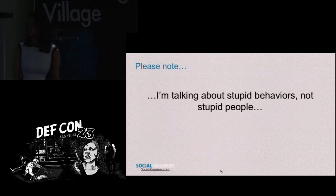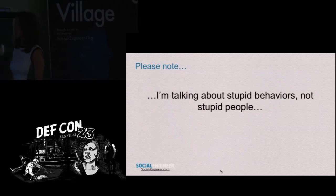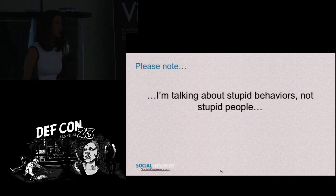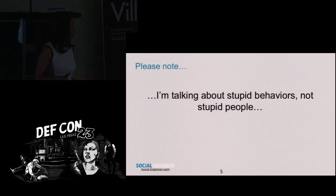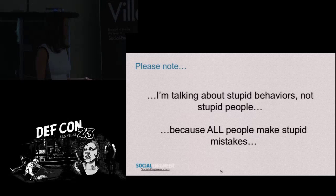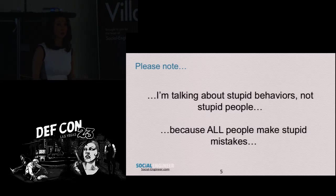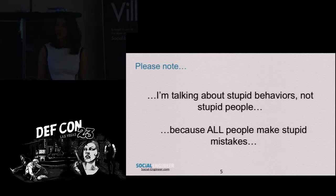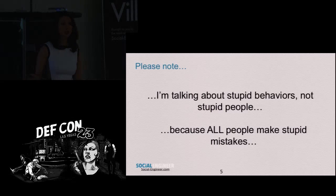Here's the thing: it's really easy to sit around and talk about stupid people. But really, I want to talk today about stupid behaviors and the reasons why we make stupid decisions, because we have all done it at some point in time. The smartest people in here have made a dumb or bad decision. And the really interesting thing to know as social engineers is that if you understand why and how people make these decisions, you can affect their choices — whether that is for good or for evil, depending on your profession.